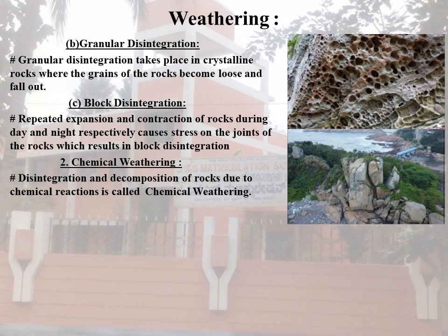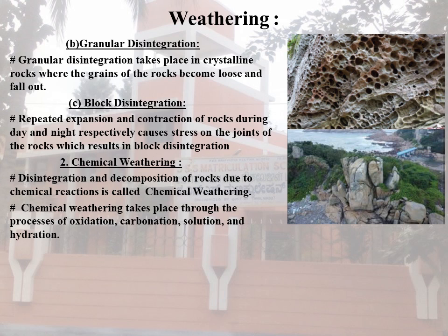Chemical Weathering takes place through the processes of oxidation, carbonation and hydration. The agents of chemical weathering are oxygen, carbon dioxide, hydrogen, iron, and water.